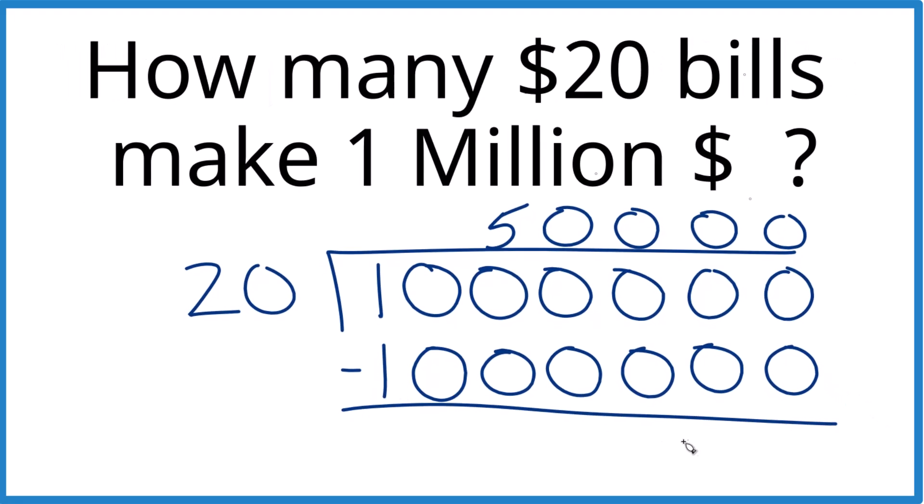And then if you subtract, no remainder. So if you had a million dollars, you would have 50,000 $20 bills. That'd be a pretty big stack of $20 bills. And you can check your work: 20 times 50,000, that would give you one million.